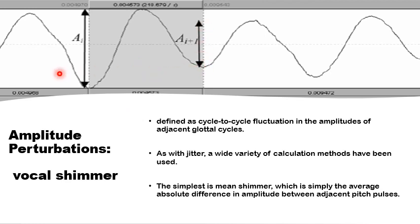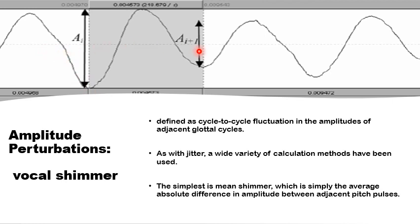The amplitude perturbations are called vocal shimmer and are defined as cycle-to-cycle fluctuations in the amplitude of adjacent cycles. As with jitter — which is the perturbation in the fundamental period of each glottal cycle — there have been many ways in which vocal shimmer can be quantified. The simplest is the average shimmer across a certain period, where the differences between consecutive cycles are added up and divided by the number of cycles.